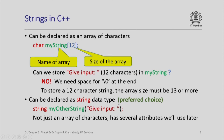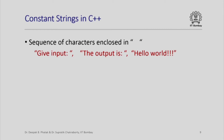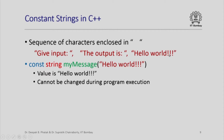A string can also be declared as a string data type, which is the preferred choice in C++ programming. For example, you could say string variable_name = "give input: ". The string data type is certainly an array of characters but it also has several attributes that are very useful in C++ programming. We can also have constant strings, declared using the keyword const — for example, const string my_message = "hello world". Because it is a constant string, its value cannot be changed during program execution.